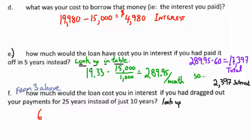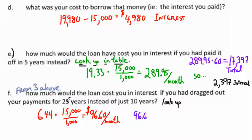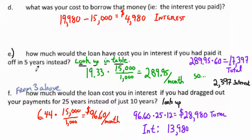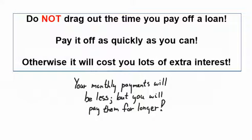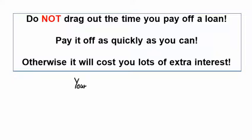What if you drag it out for twenty-five years? You have to look it up in the tables again — any time you change the amortization period or rate, look it up again. If you drag it out for twenty-five years, it's going to end up costing you thirteen thousand nine hundred eighty dollars in interest for your fifteen thousand dollar loan — pretty much doubling what you borrowed. The secret is: any time you've got a loan, pay it off as quickly as possible.